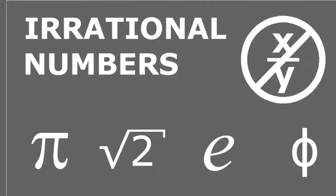When we talked about the rational numbers, we said that they can be expressed as a ratio of two integers. The irrational numbers are the exact opposite — you will never be able to write an irrational number as a ratio or a fraction that is composed only of integers.